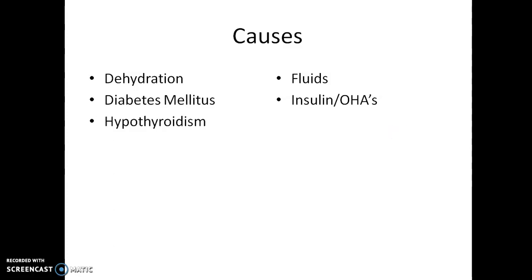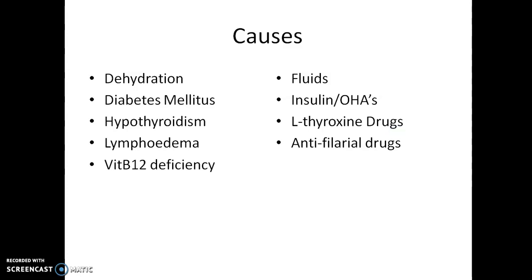In hypothyroidism, mainly we have to give replacement of hormone. Hormone replacement therapy, that is L-thyroxine or the hormone which is deficient has to be replaced. Lymphedema is mainly because of filariasis, so anti-filarial drug has to be given. Or if it is due to some pathological tumors, the tumor has to be operated and removed. Vitamin B12 deficiency in pure vegetarians, so vitamin B12 injection can be given, or animal food if they are able to consume.